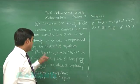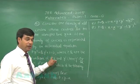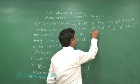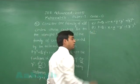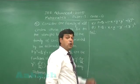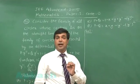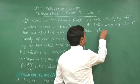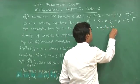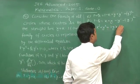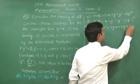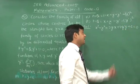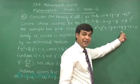I have to find p and q from this equation. Let us start by considering the equation of a circle whose center lies on the line y equals x. Let the family of circles be x² + y² + 2gx + 2gy + c = 0, because the center is on the line y equals x.